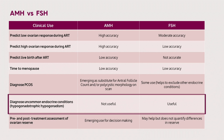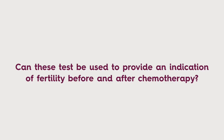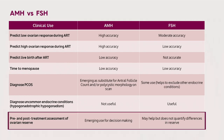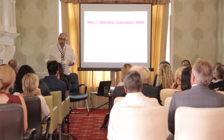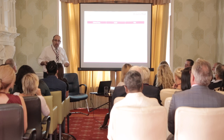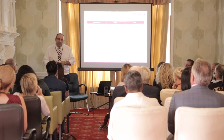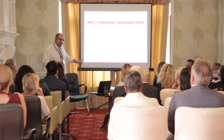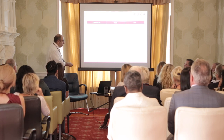A very recent usage of this test is monitoring ovarian reserve before and after an intervention. For example, if a woman with cancer is about to undergo chemotherapy, can we use the test before and after to judge the damage done to her ovaries? Or if a woman is about to have ovarian surgery for endometriosis, can we use it before and after to assess impact? It is early days, but it appears that AMH is likely to be more helpful there.